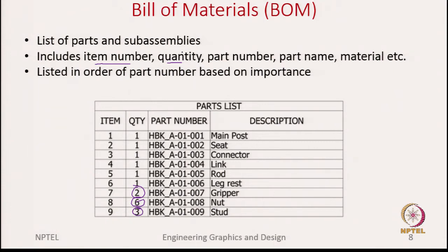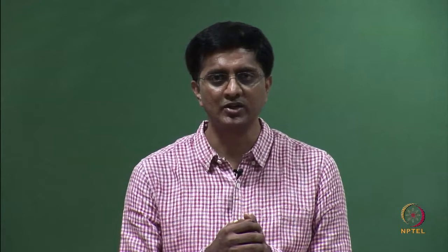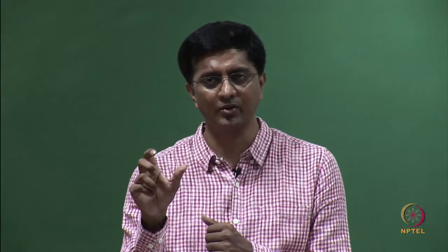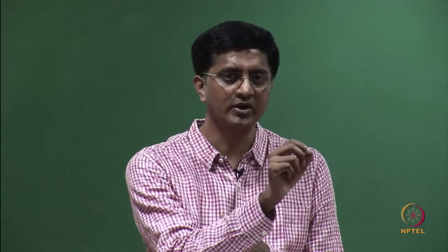In addition to the item number and quantity, we also show the part number and part name. One important thing to note is that a part number and part name is a must for each and every individual component as well as sub-assemblies and assemblies, because these are the pointers people use to trace the designs. For example, if one year down the line there is some maintenance or design change, people need to identify each part by its part number so they can go back to the design of that part and see if any modification needs to be done.